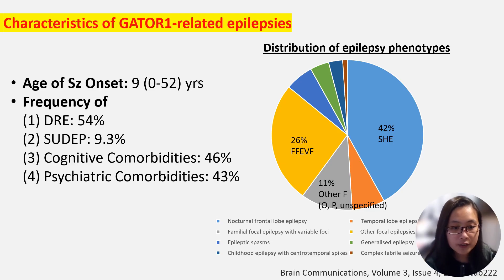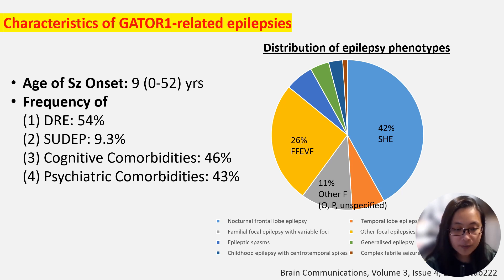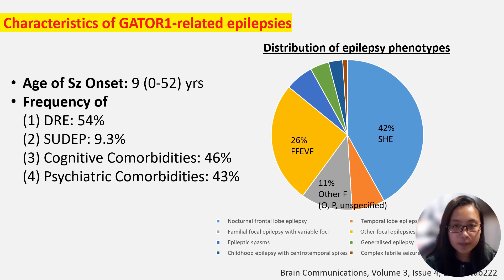Let's take a look at GATOR-1-related epilepsy. The age of onset is variable, from infancy to adulthood. About half of the patients have drug-resistant epilepsy. The SUDEP rate is high, nearly 9%, and nearly 45% of patients have cognitive and psychiatric comorbidities. The most common epilepsy phenotype is sleep-related hyperkinetic epilepsy, followed by FFEVF and other focal epilepsies.